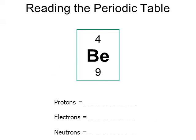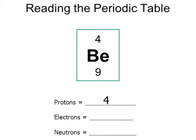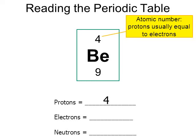Let's use another example. Be stands for beryllium. If I were to give you a moment to figure out protons, electrons, and neutrons — pause the video if you want to try it on your own. The number on top, the four, that's the atomic number — that tells me the number of protons. So beryllium has four protons. Remember, the atomic number is the number of protons by definition, but the proton number is usually equal to the electron number. So beryllium also has four electrons.